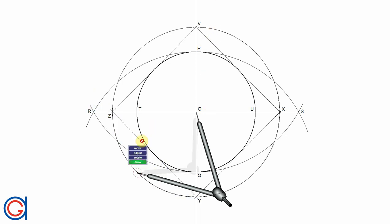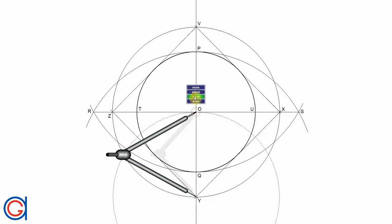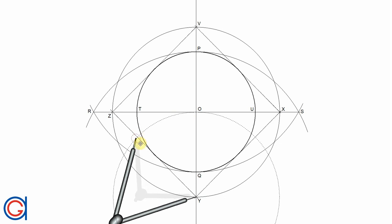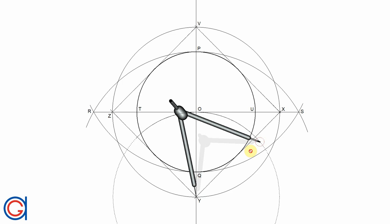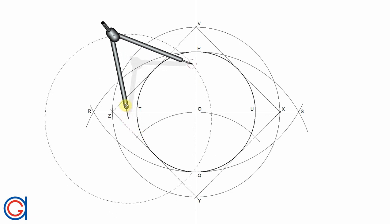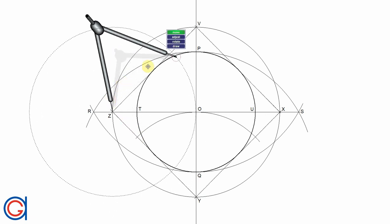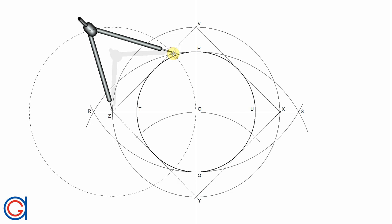So now getting our compass again and setting it to the length OY and setting the compass on Y we scribe a semicircle which cuts the previously drawn rhombus at two new points, two new vertices which will be vertices on the octagon that we want to draw.